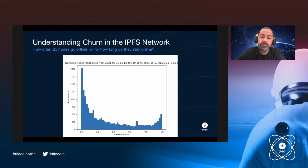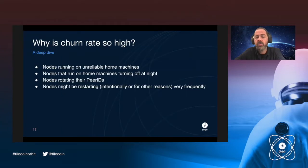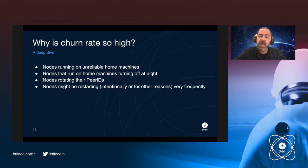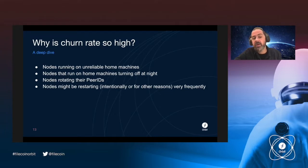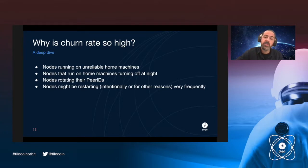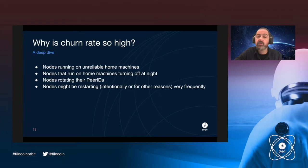We started thinking about what is causing this and asked several questions: whether nodes are running on unreliable home machines, whether nodes on home machines turn off at night — which is normal behavior for a regular user — and whether nodes are rotating their peer IDs, either intentionally or unintentionally due to bugs.